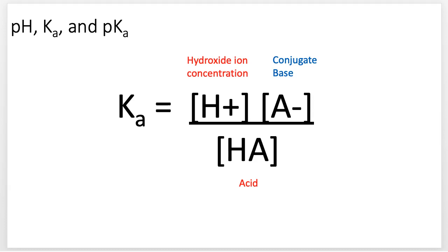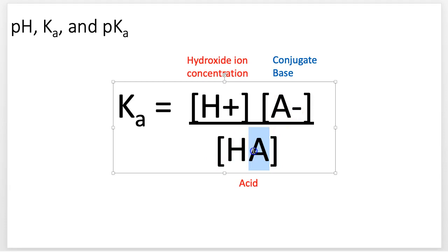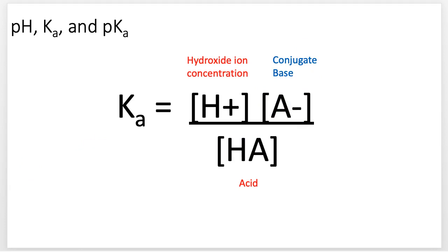Ka is equal to this equation: we've got our concentration of hydrogen ions together with the conjugate base, divided by the concentration of the acid itself. So we have our acid — which could be anything — with the hydrogen attached. If it loses that hydrogen, we're left with the acid minus that positive charge, giving it a negative charge. That's our conjugate base.